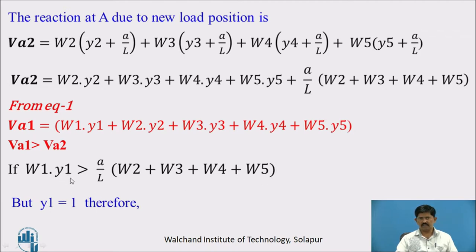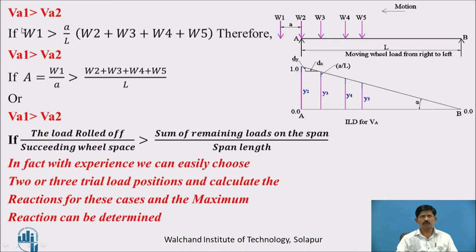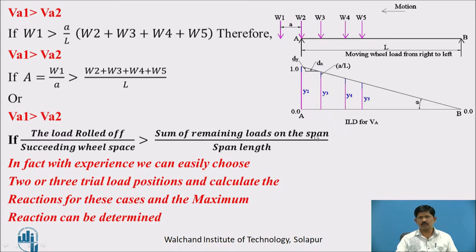Therefore VA1 > VA2 if W1/a > (W2 + W3 + W4 + W5)/L. In other words, VA1 is greater when the load rolled off divided by the succeeding wheel spacing is greater than the sum of remaining loads on the span divided by the span length. With experience, we can easily choose 2 or 3 trial positions to calculate the maximum reaction.